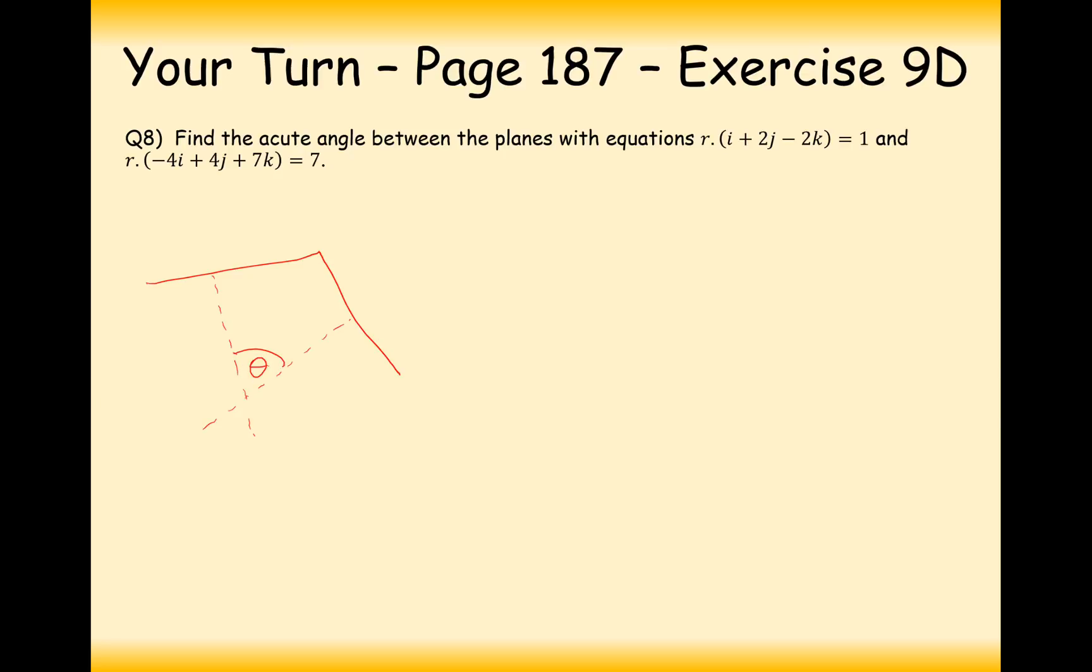What we're looking for to find first is this theta angle here. Then what we'll do after we've found that angle there is we'll do 180 minus theta to get this angle here. Let's start working this out then. cos theta is equal to (1, 2, -2) dotted with (-4, 4, 7) divided by the square root of (4² + 4² + 7²) times by the square root of (1² + 2² + (-2)²). Well, it's going to be -4 + 8, so that would be 4 - 14, so that would be -10 on the top. And on the bottom here, it's going to be the square root of 4² + 4² + 7², which gives you 9 times 3.